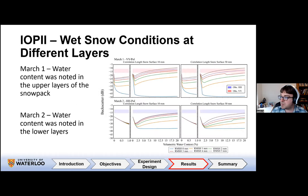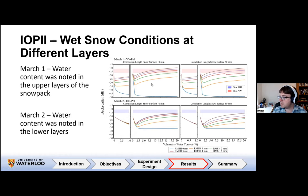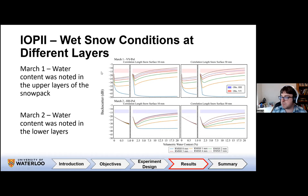We wanted to explore how wet snow conditions at different layers impact backscatter. On March 1st the snowpack was wet at the top, while on March 2nd the wetness had moved to the lower layers. There is a small difference between the two days, but in both cases it's the roughness at the top of the wet layer that matters — for March 1st it's the top of the snowpack, and for March 2nd it's the interface between the dry and wet snow layers. HH polarization is slightly underestimated compared to VV, but results are similar.